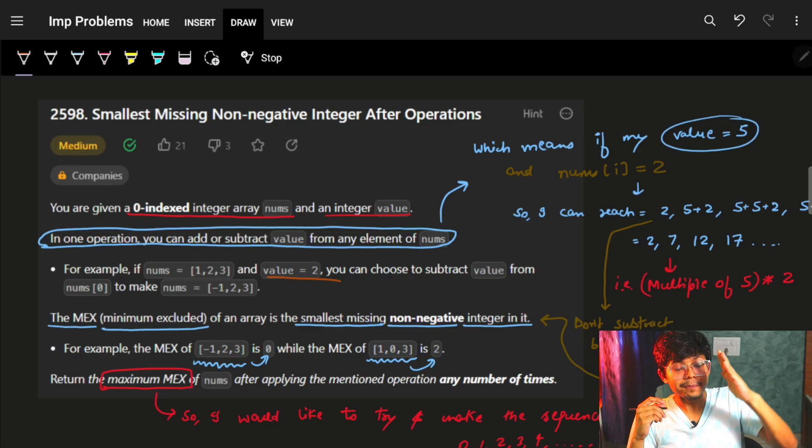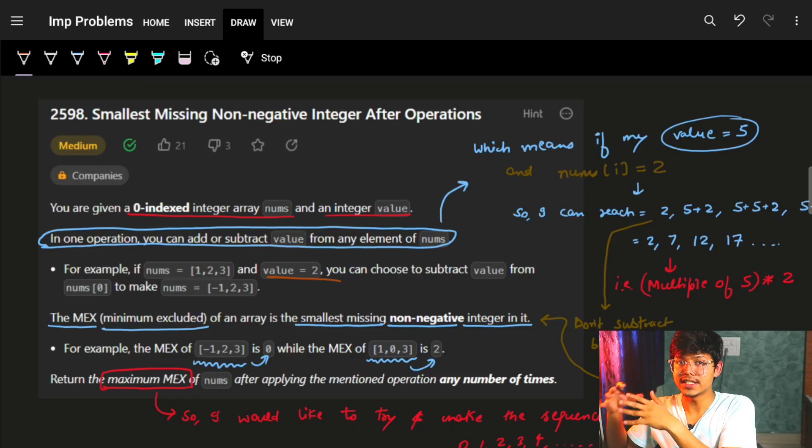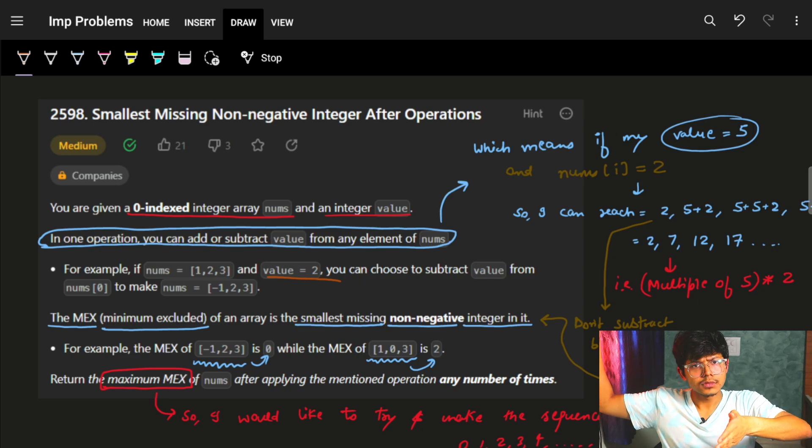MEX, which means minimum excluded, is defined as the smallest missing non-negative integer in the nums. If we have something like 0, 1, 2, 3, 4, 6, 8, then you can easily see the first missing element.